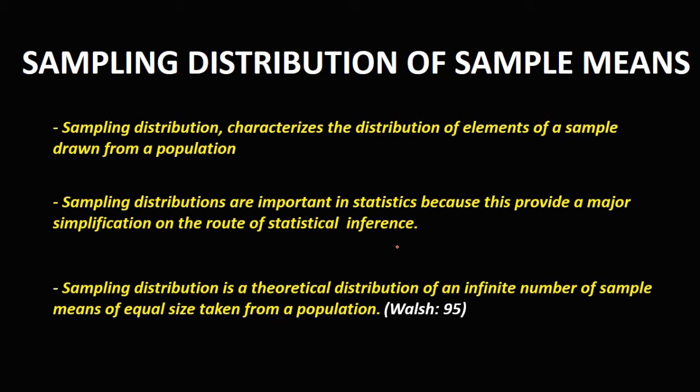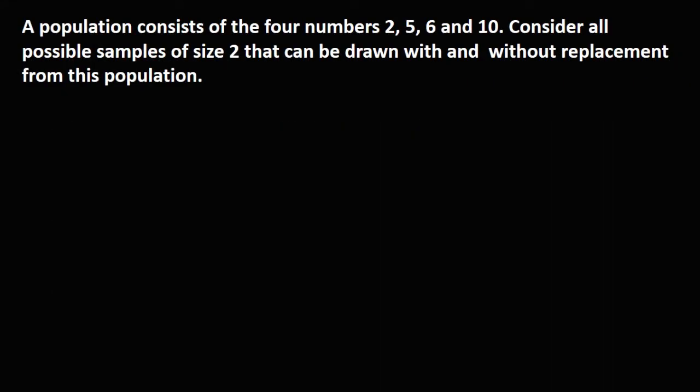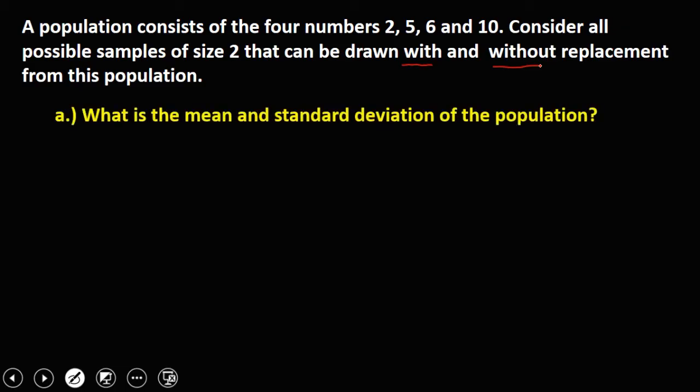To understand more about the sampling distribution of sample means, let's solve this problem. A population consists of four numbers: 2, 5, 6, and 10. Consider all possible samples of size 2 that can be drawn with and without replacement from this population. What is the mean and standard deviation of the population?